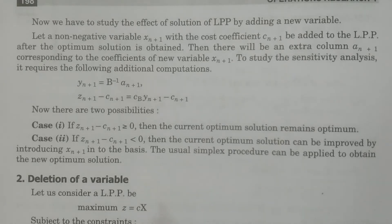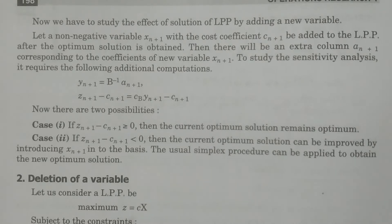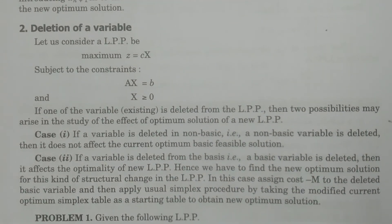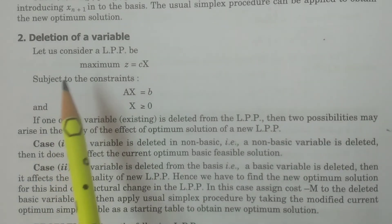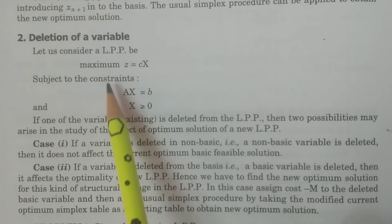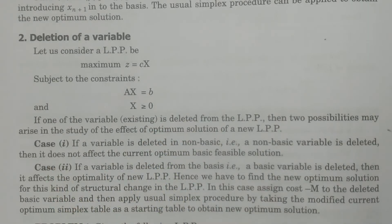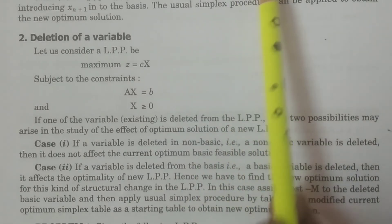So if you add one particular variable, then we have discussed what the solution would be and how the structural changes are going to take place. Now, the second case: deletion of a variable. Addition was completed; now deletion of a variable. In the case of deletion of a variable, we consider as usual a linear programming problem: Maximize Z equal to CX, subject to the constraints, where one of the existing variables is to be deleted.